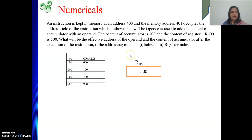This type of numerical we have already seen. An instruction is kept at memory at address 400, and at 401 we have the address field. Some more memory locations values are given, and it is said that accumulator is holding 100 and one register R600 is holding value 500.